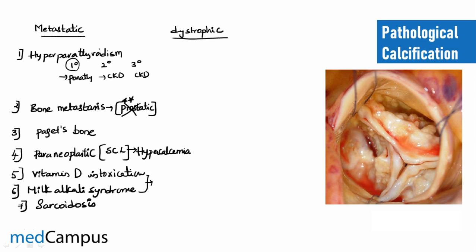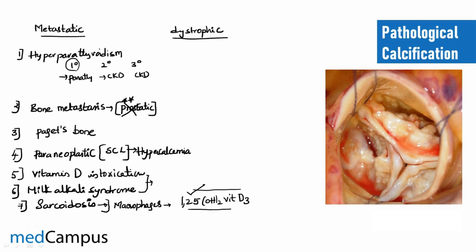In vitamin D intoxication and milk-alkali syndrome there is excess calcium due to vitamin D or ingestion of calcium and phosphorus. The last example is sarcoidosis — an important exam topic. In sarcoidosis, macrophages synthesize 1,25-dihydroxyvitamin D3, whose primary role is to help in calcium absorption. The excess synthesis of this active vitamin D3 by macrophages leads to increased intestinal calcium absorption and increased bone resorption of calcium, all resulting in hypercalcemia and metastatic calcification.